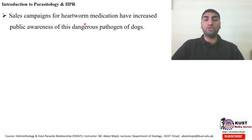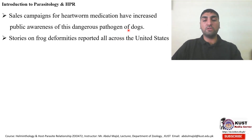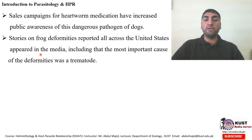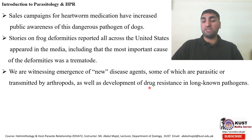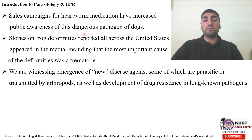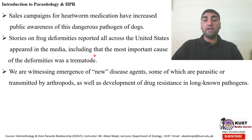Sale campaigns for heartworm medications have increased public awareness of this dangerous pathogen of dogs. The picture of this is in the next slide. Stories on frog deformities reported all across the United States appeared in media, including that the most important cause of these deformities was a trematode. And we are also witnessing the emergence of new disease agents, some of which are parasitic or transmitted by arthropods, as well as the development of resistance to drugs in long-known pathogens.